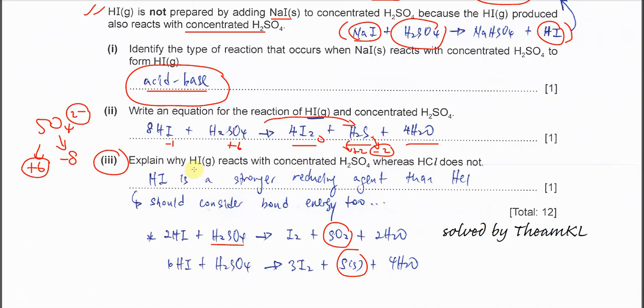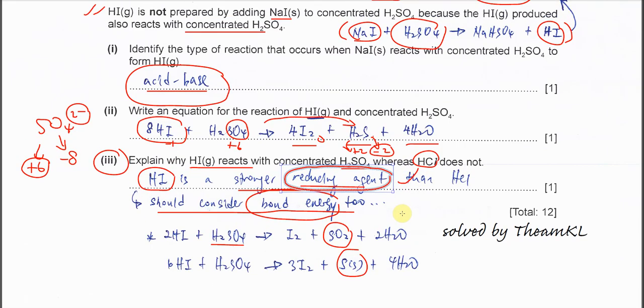Explain part 3 - explain why HI reacts with concentrated H2SO4 whereas HCl cannot. Because we know that HI is a stronger reducing agent. Why? Because HI reduces sulfate to H2S, so it's actually a stronger reducing agent or stronger reducing power than HCl. Actually, we should consider the bond energies too. Because the bond energy of HI is much less than HCl, that's why HI is easier to break and reacts with others. However, the reducing agent - this answer is better. That's all for this question. Thank you.